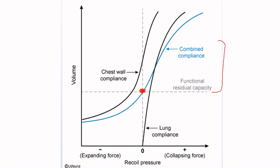The area of highest volume on the curve represents maximal inspiration, and the equilibrium point represents end-tidal expiration — which corresponds to functional residual capacity. The whole point of asking questions on these curves is to understand the value of negative intrapleural pressure and that it is created as a result of these opposing forces.